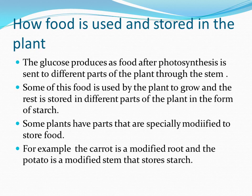Some food the plant uses to grow and the rest it stores in different parts of the plant in the form of starch. Just like at home, our mother uses some rice for cooking and stores some for other days — the same applies here. The food may be stored in the root, stem, leaf, or flower. For example, in carrot the food is stored mainly in the root, and in potato the food is stored in the stem.